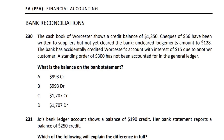Hello friends, welcome to my channel. We will do a jam-hit solution for the bank reconciliation chapter. Let's go to the question 2-3-3. The cash book of Worcester Store has a credit balance of 1350, and six of the cheques have been sent to suppliers but not yet credited by the bank.